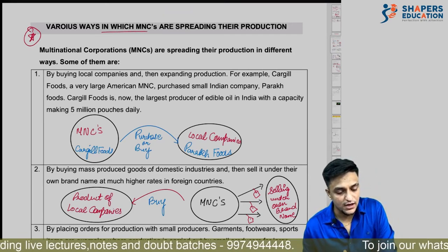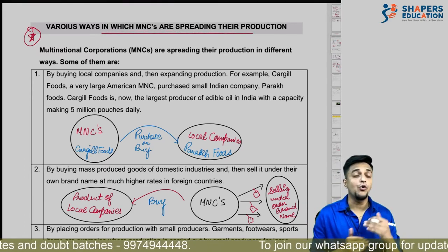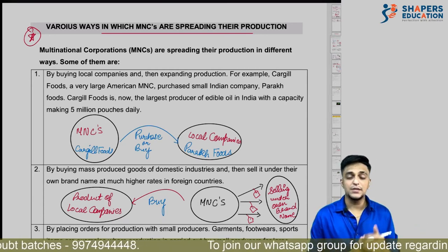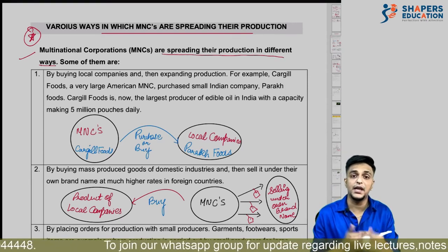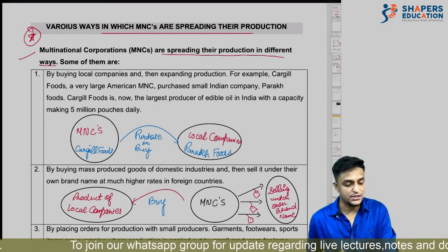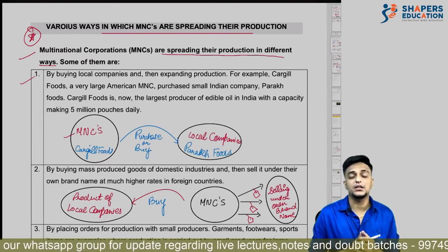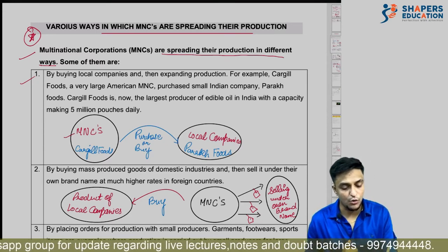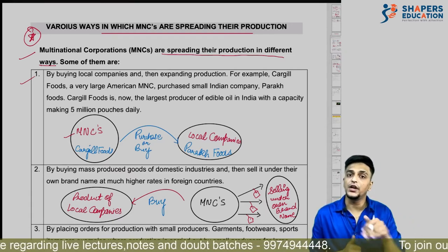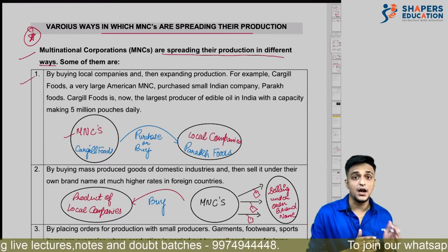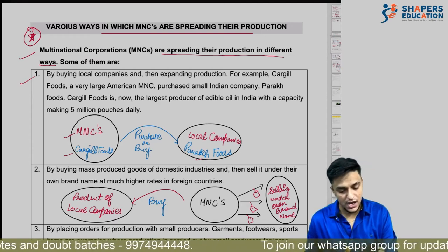From the examination point of view — various ways in which MNCs spread their production: how do MNCs expand their production in different countries? The question can be: 'Multinational corporations are spreading their production in different ways — explain/justify/comment.' The first way is buying local companies.